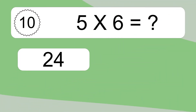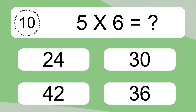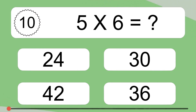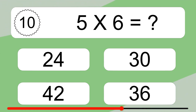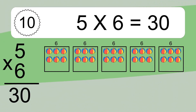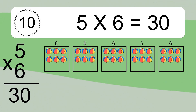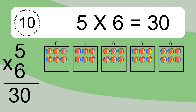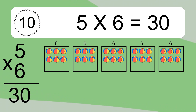5 times 6 equals what? 5 times 6 equals 30. We have five boxes and each box has six colorful balls inside. If you count all the balls in all the boxes together, you will have five times six balls. This equals 30 balls.